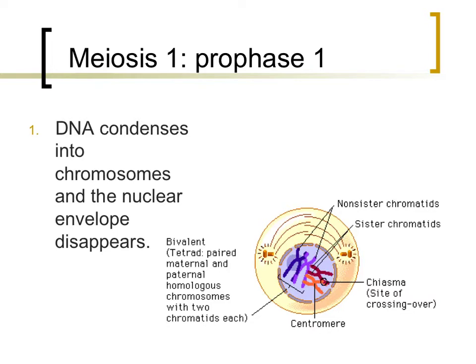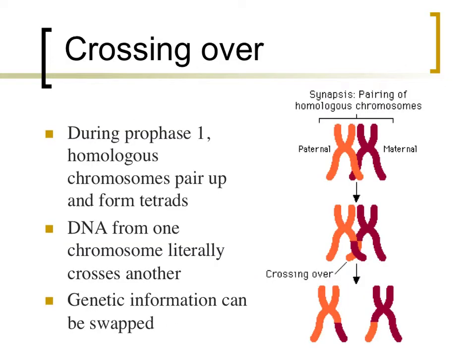The first stage of meiosis is prophase I. During this phase, DNA condenses into chromosomes and the nuclear envelope disappears, just like you'd find in mitosis. One thing that is significantly different in meiosis than mitosis is how chromosomes are arranged during prophase. During prophase I of meiosis, chromosomes arrange themselves as homologous pairs.